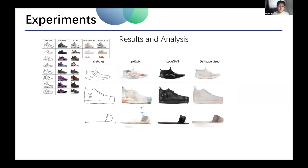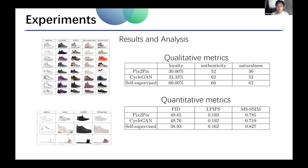We distributed questionnaires through the website Questionnaire Star. The qualitative and quantitative evaluation results are shown on the slide. From the quantitative evaluation, we can see that the self-supervised method had the best performance. The performance of CycleGAN and PIX2PIX are close. However, in terms of MS-SSIM, PIX2PIX performs better than CycleGAN, which may be because images generated by PIX2PIX have higher structural similarity with the ground truth.